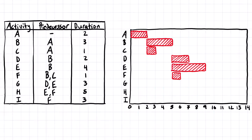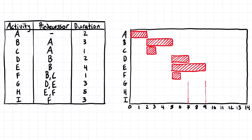When we move on to activity G, it also depends on activity D and E, and it's three days long. So we're going to find out where activity D finishes — it's going to be here at the end of the seventh day — and activity E finishes here at the end of the ninth day. So we can't start until both of those are complete, meaning we have to start after the end of the ninth day, which is also the beginning of the tenth day, and it is three days long.